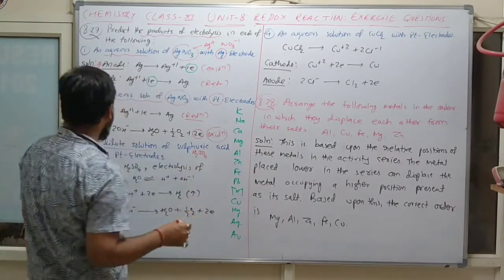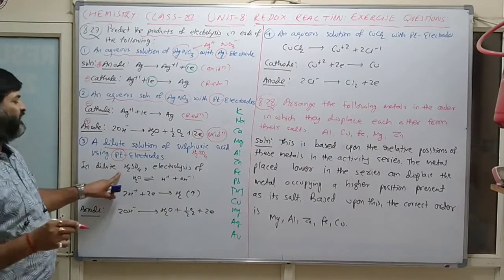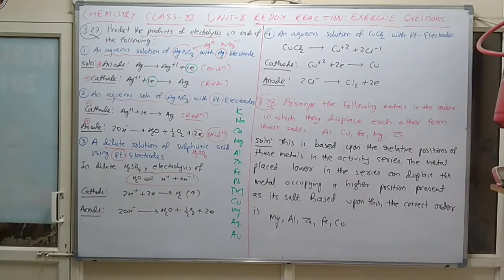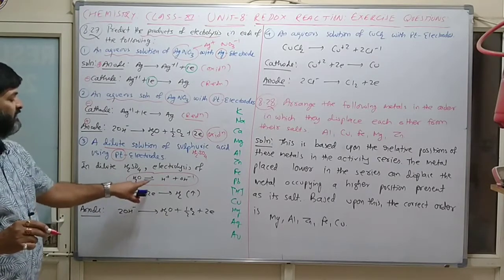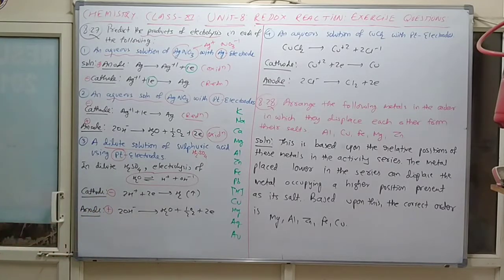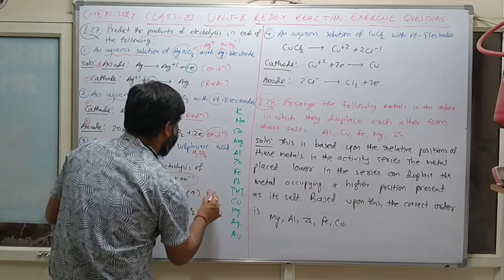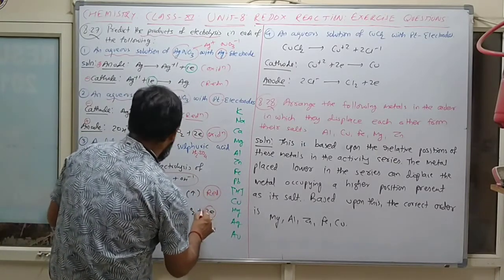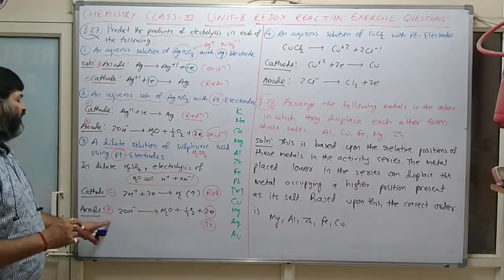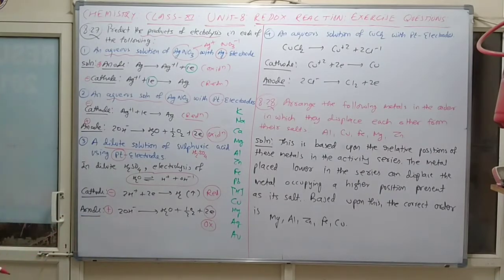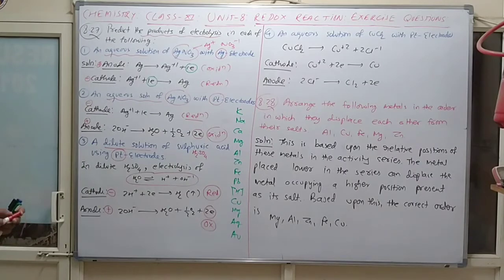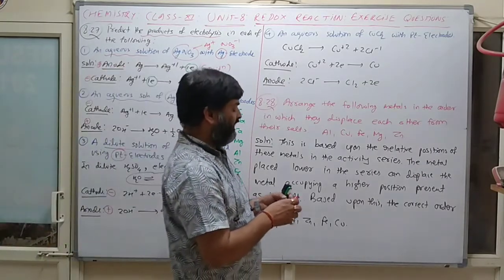Dilute sulfuric acid with platinum electrode: electrolysis of water occurs. H₂O gives H⁺ and OH⁻. The cathode is negative and anode is positive. Reduction takes place at cathode and oxidation at anode. When water decomposes, half a mole of oxygen and two electrons are generated at the anode.